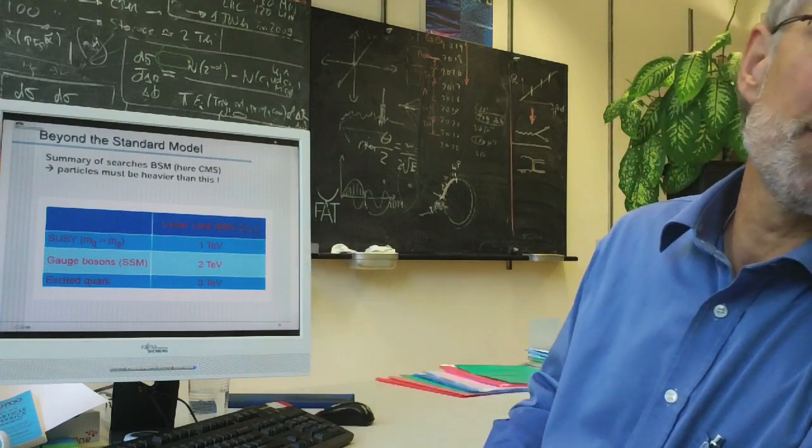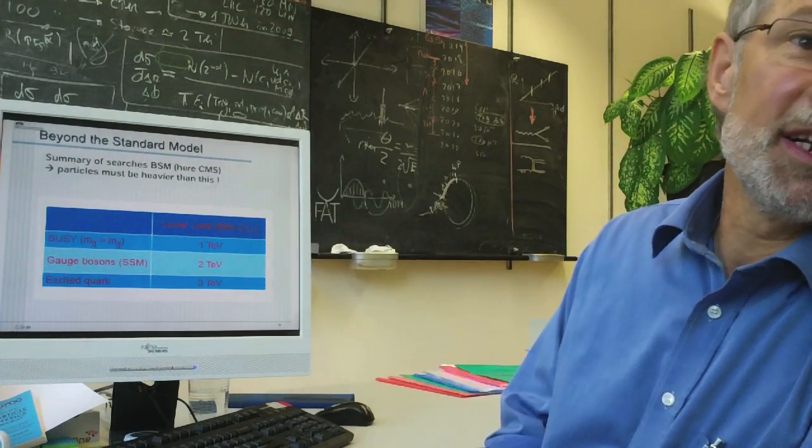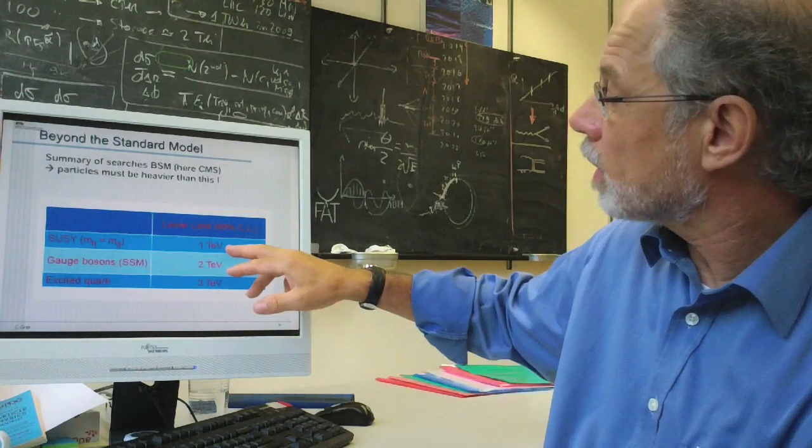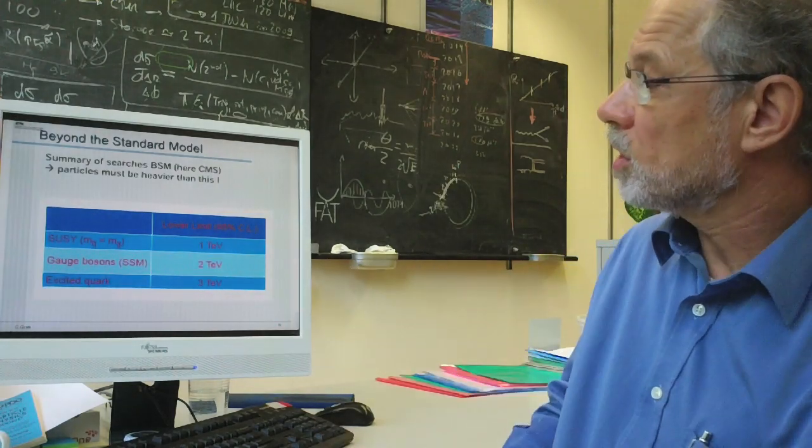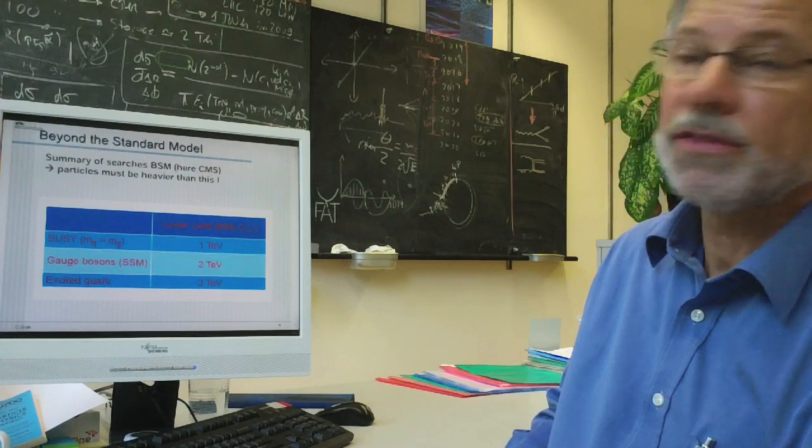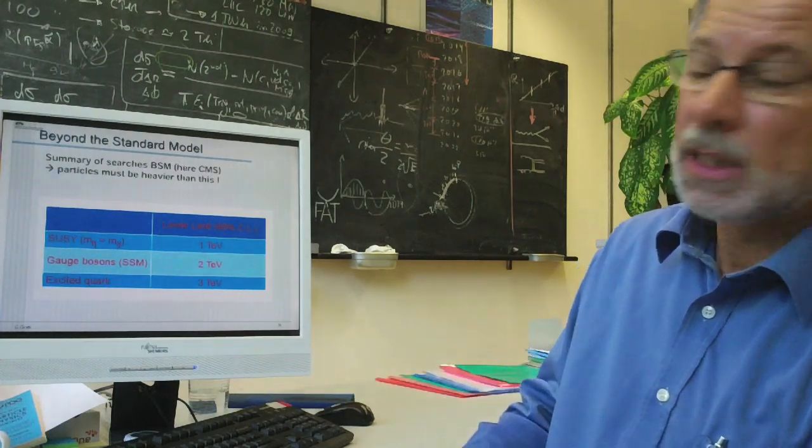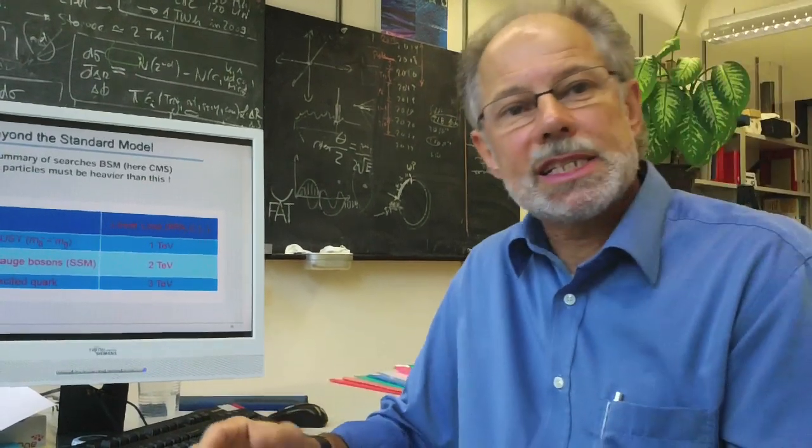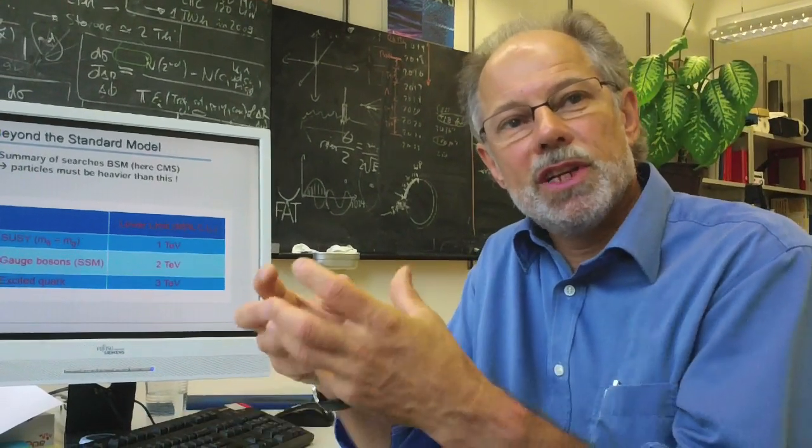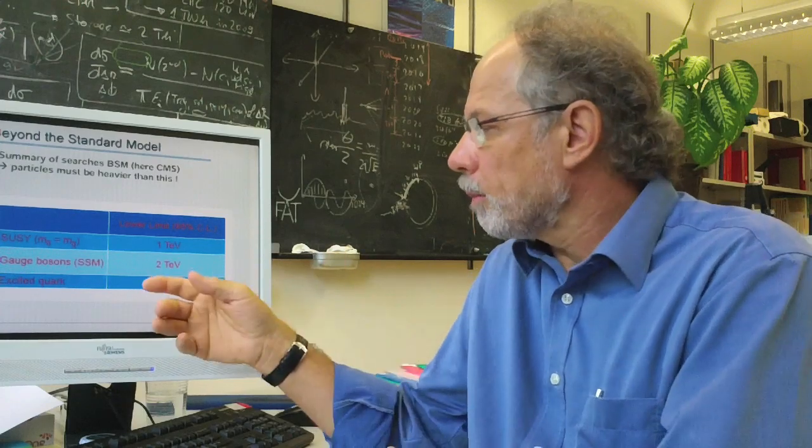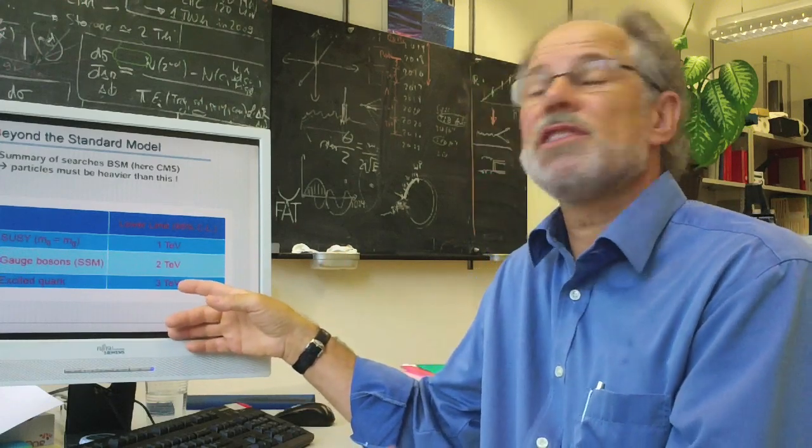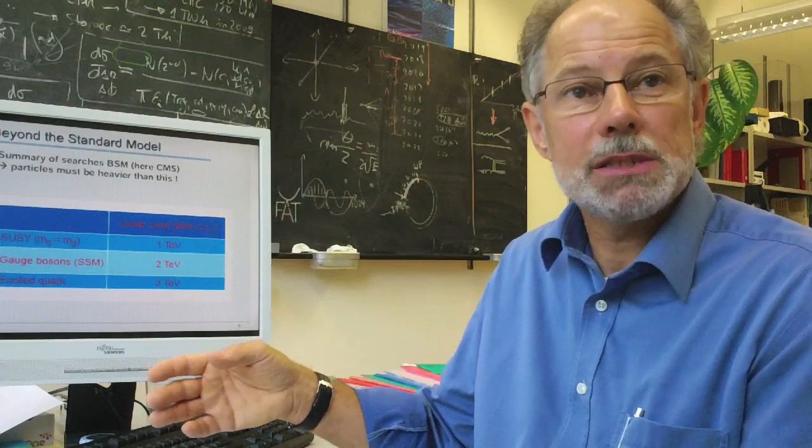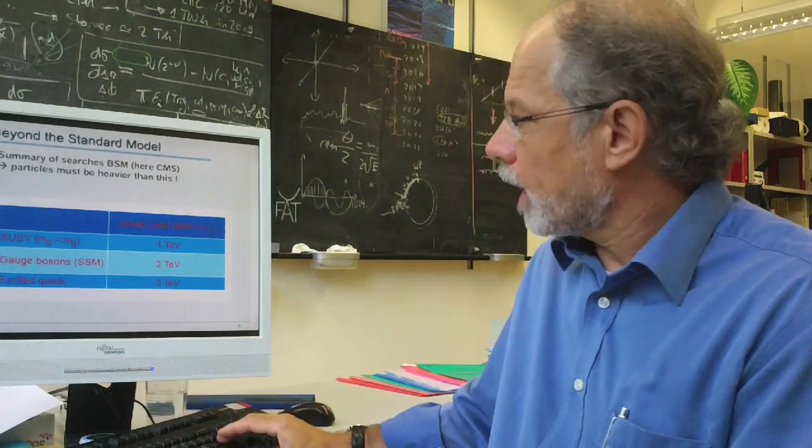Now beyond the standard model, there are many, many possibilities and models, right? So I just give you an example. If you look for SUSY models, the lower limit that we see now is something of the order of one TeV. But we could have additional gauge bosons. And there we have limits of the order of two TeV. Or you could have even excited quarks. That means real quark states which are excited. And the mass limit that we reach now is something like three TeV. So that means they have to be heavier than that. Otherwise, we would have seen them.